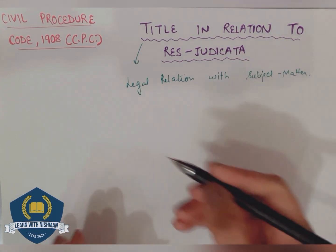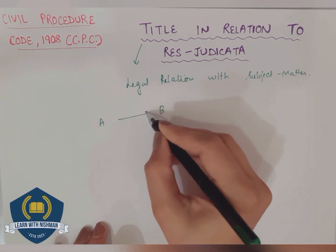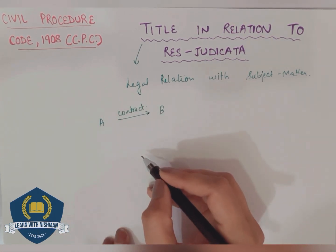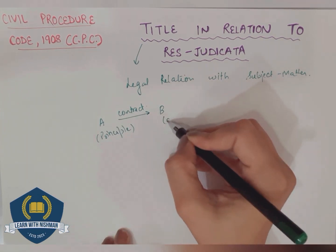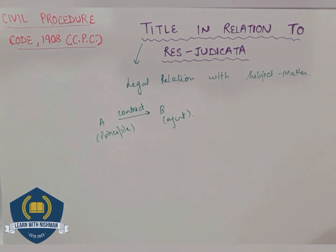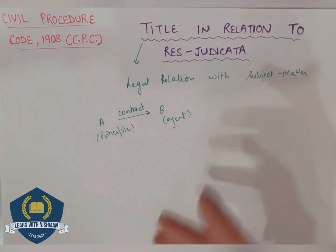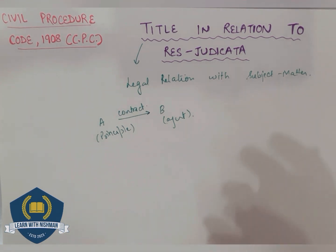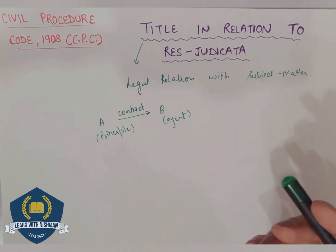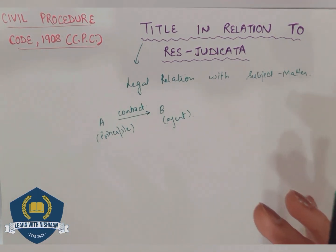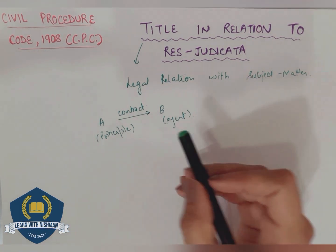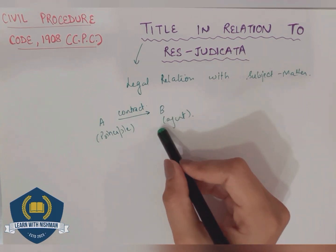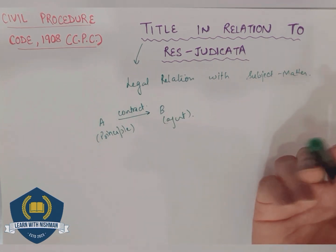Let's take an example. Suppose A and B — A is the principal and B is the agent. The contract between them is that B will do something for A, and B will not commit any tort against A. Later, B is negligent and commits a tort. So A filed a suit against B claiming damages for breach of contract. The suit was dismissed. Later on, again he files the suit against B, and this time he claims damages under the law of tort.